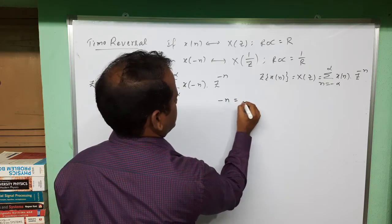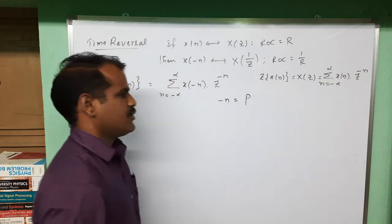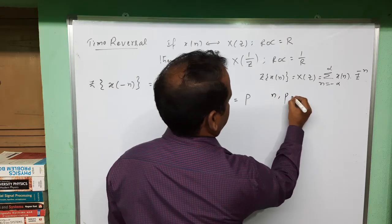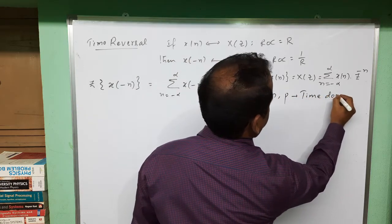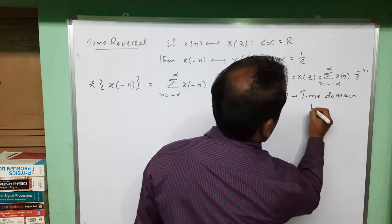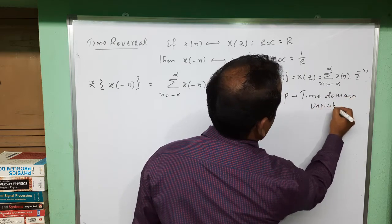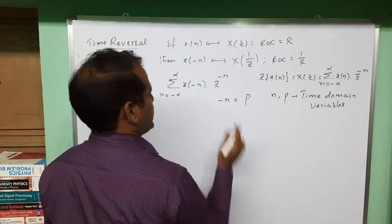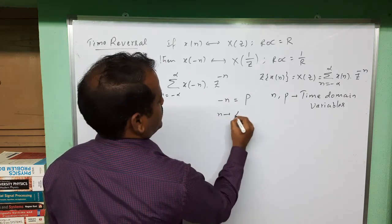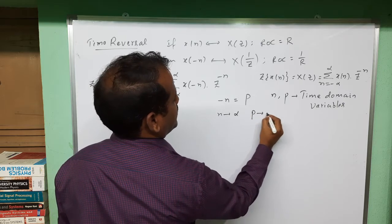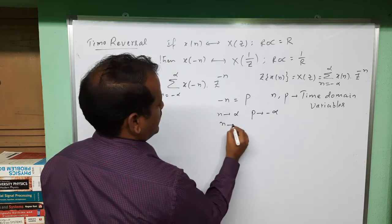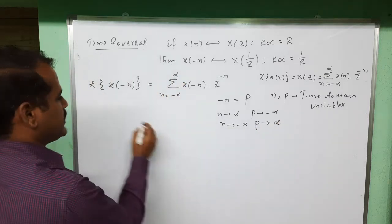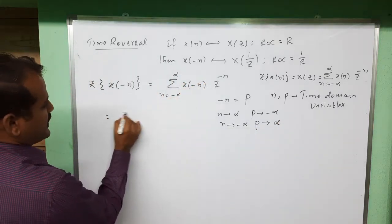Now, let us take a new time-domain variable: let -n = P, where both n and P are time-domain variables. If n tends to +∞ then P tends to -∞, and if n tends to -∞ then P tends to +∞. We rewrite this expression in terms of P.